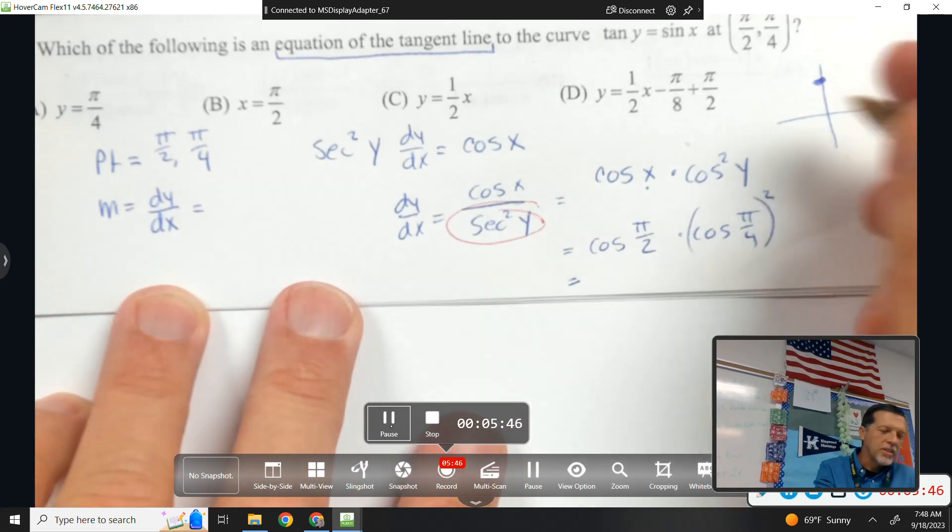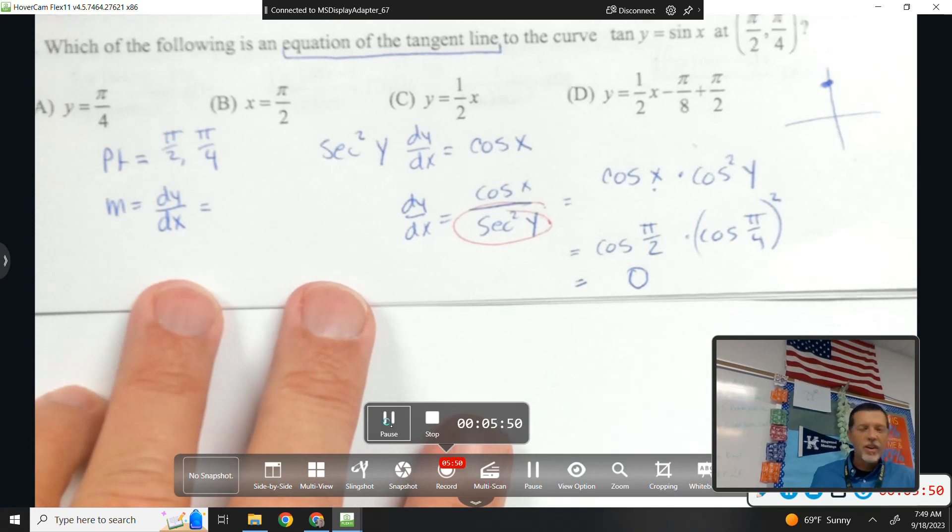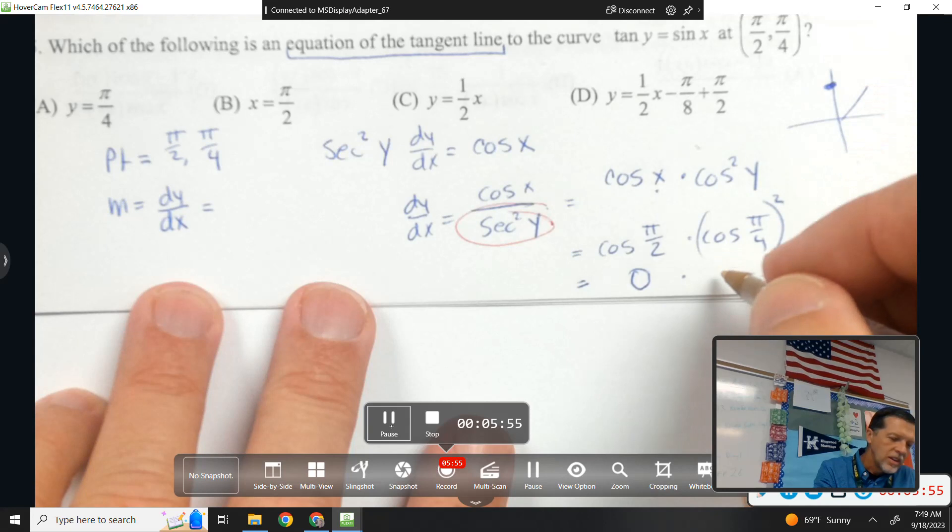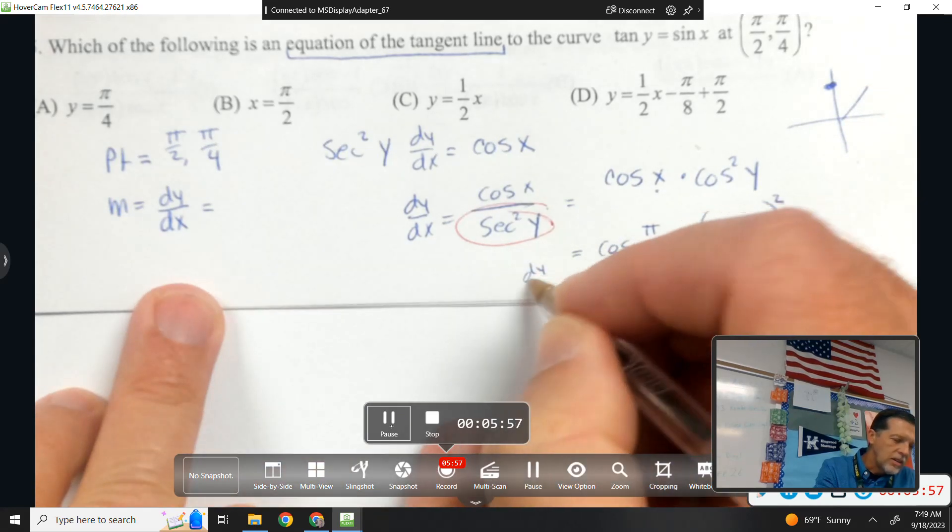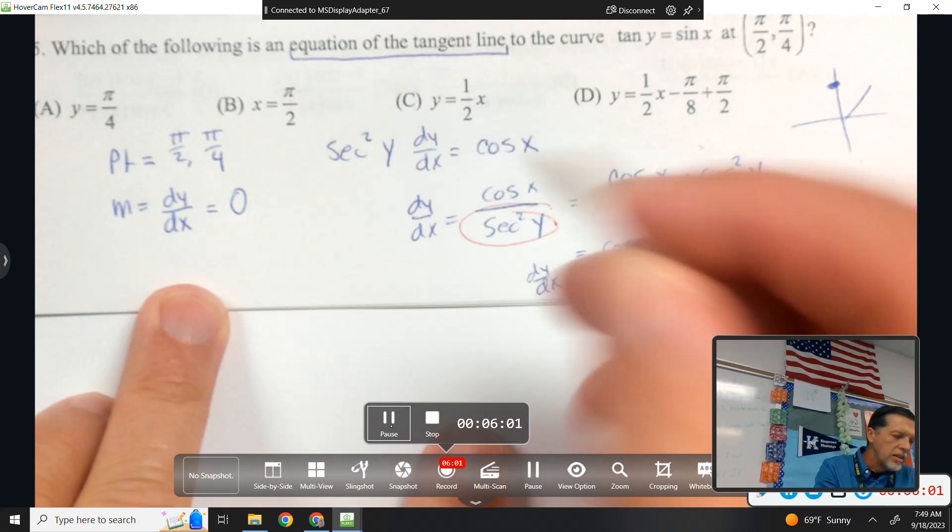X coordinate at pi over 2. Some of you are saying it and showing it zero. So then it doesn't really matter what cosine of pi over 4 is. dy/dx is zero. So my slope is zero.